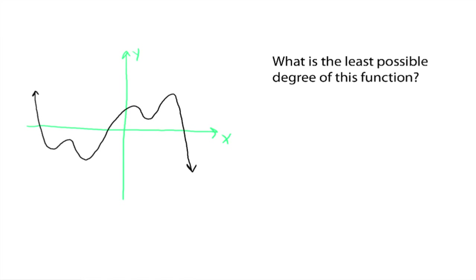So what's the least possible degree of this function on the left, assuming it's a polynomial? Count the number of turning points: 1, 2, 3, 4, 5, 6 — there are 6 turning points, 6 local extrema. So the smallest degree this function could be is 7, a 7th degree polynomial. It could be something higher, but it can't be a 6th degree or lower because we have too many turning points. That's it for extrema — make sure you see the next video on the end behavior of a polynomial function, which will tie back into this concept.